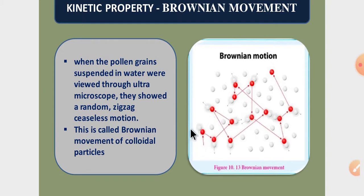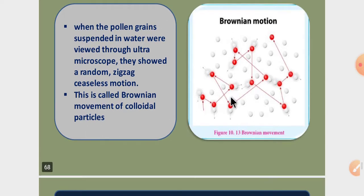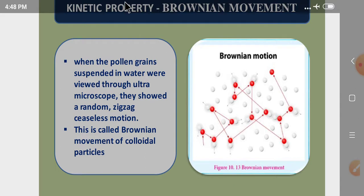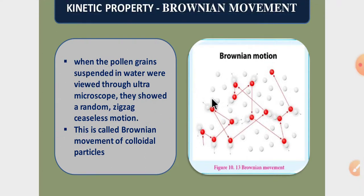Robert Brown discovered the movement of colloidal particles, which we call Brownian motion. The colloidal particles are continually bombarded with the molecules of the dispersed medium and hence they follow a zigzag random motion. The advantages of Brownian motion are: first, it can be used to calculate Avogadro's number; second, it confirms the kinetic theory, which considers the ceaseless rapid movement of molecules with increase in temperature.